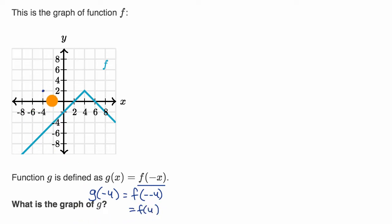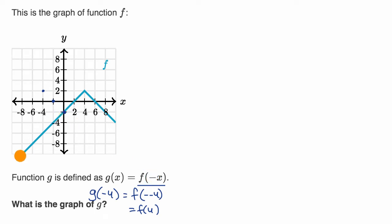What would g of negative two be? Well that would be the same thing as f of two, which is zero, so it would be right over there. What would g of zero be? Well that would be the same thing as f of zero, because the negative of zero is zero. And f of zero looks like negative two.